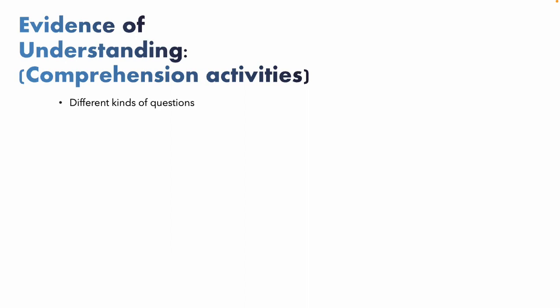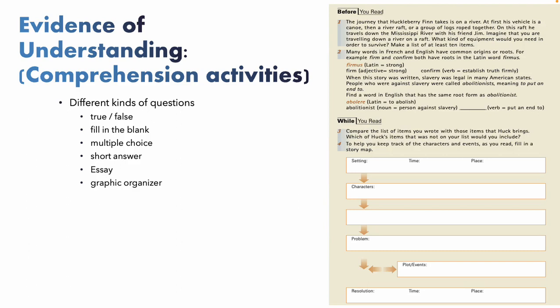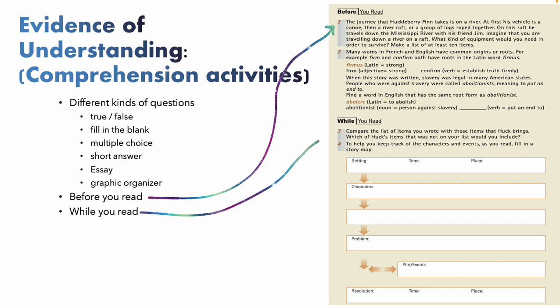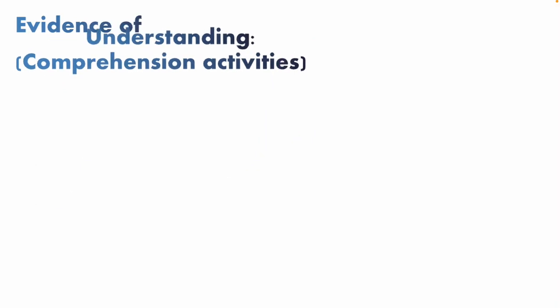Here's an example of comprehension activities from an activity book — a short excerpt from Huckleberry Finn. You can see there's a before-you-read section and a while-you-read section with different questions. The first part has short answer questions, and while you read, students are asked to fill in a graphic organizer. There are different levels of the response process: exploring and a kind of personal connection. You can see in the while-you-read: 'Which of Huck's items that was not on your list would you include?' — so we're looking at going beyond on the next page.